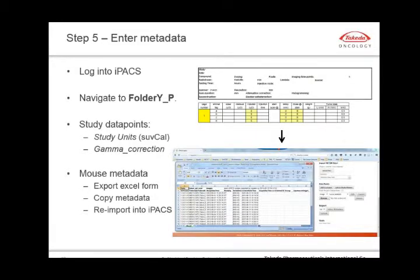Before we start drawing ROIs, we need to enter the metadata, which was captured during acquisition in a separate Excel spreadsheet. We export a spreadsheet from IPACS from the underscore P folder — the tumor analysis spreadsheet — copy that data in and re-import it, and it will automatically assign each metadata point to the appropriate image. At the study level, we enter the SUV calibration factor to get quantitative information, and we also modify the gamma correction to allow clearer visualization of the images for the data selection and visual QC step.